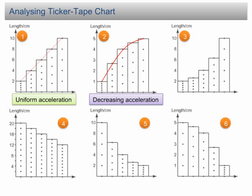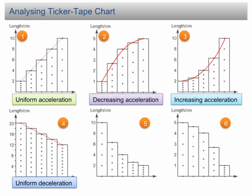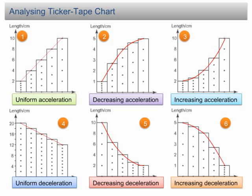Chart 3 is the opposite of chart 2 — the speed increased and the acceleration also increased along the motion. This is an example of increasing speed and increasing acceleration. In chart 4, the length of the tape decreases uniformly, indicating that the velocity decreased at a uniform rate, meaning the object underwent uniform deceleration. In chart 5, the speed decreased abruptly at the beginning; however, the rate of decrement decreases over time — this is an example of decreasing deceleration. Chart 6 shows an example of decreasing speed at an increasing rate, in other words, increasing deceleration.